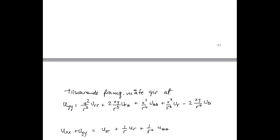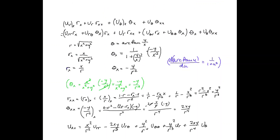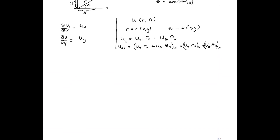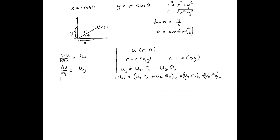If you are unsure about these subscript symbols, let me recall that every time we take the derivative of u with respect to x, we abbreviate this as u with index x, written u_x. If we take the derivative of u with respect to y, we write u_y. So now we understand what u_x means, and also u_xx.